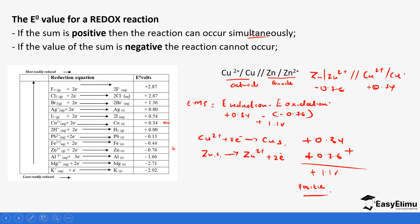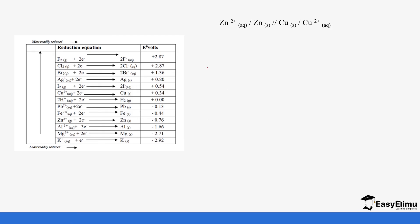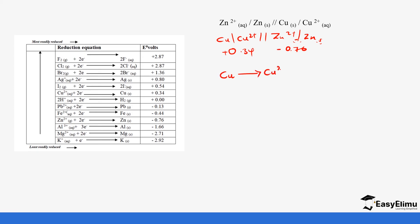Let's reverse the equation and see what happens. We have copper dissociating to form copper ions, then salt bridge, then zinc ions forming zinc solid. The standard electrode potentials remain: copper is positive 0.34 and zinc is negative 0.76. But we need to be careful because we have changed the equation — copper is now losing electrons, so we must change the sign to negative 0.34.